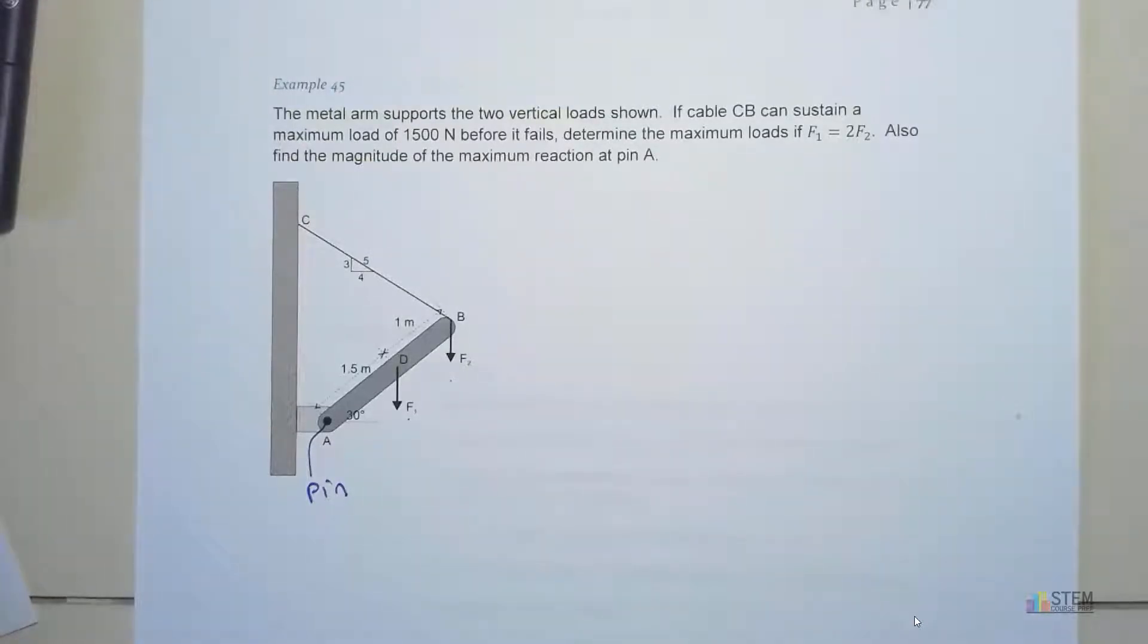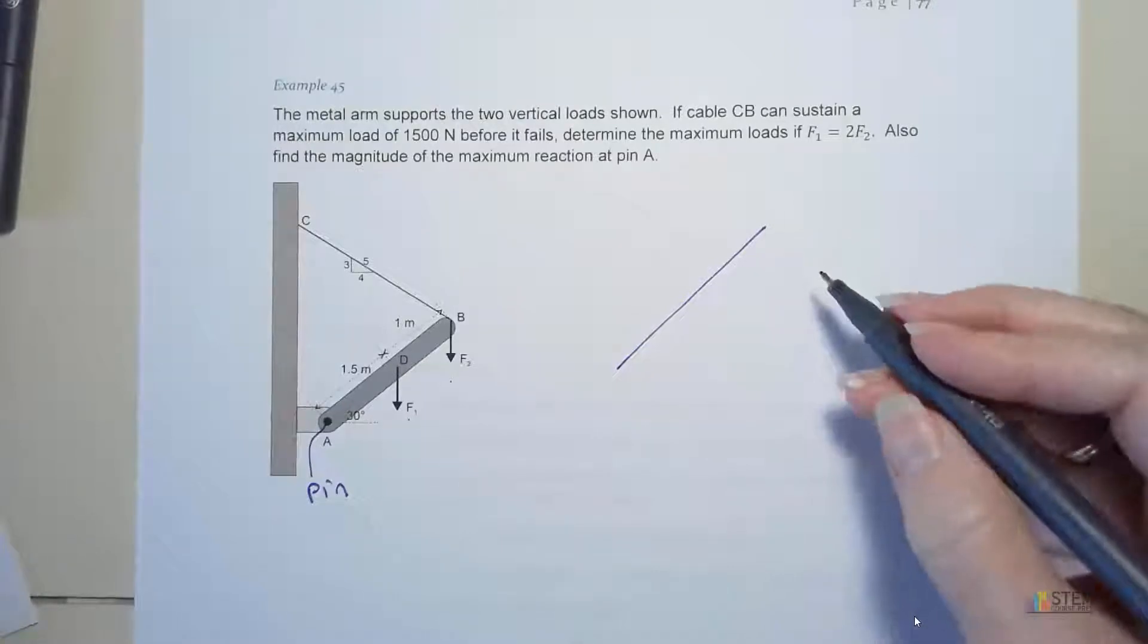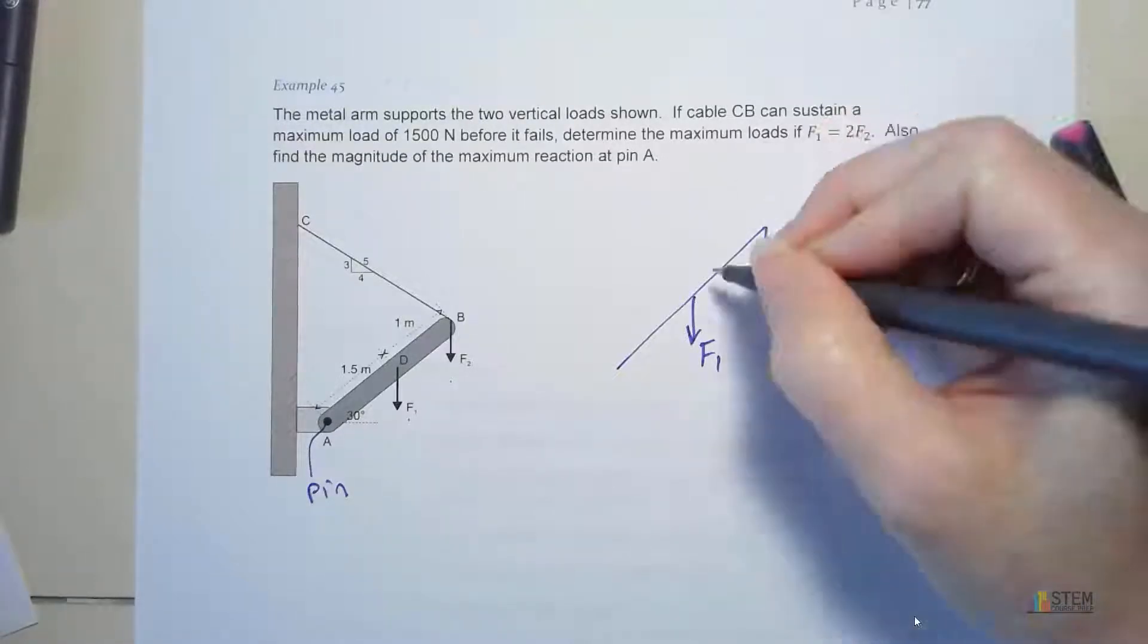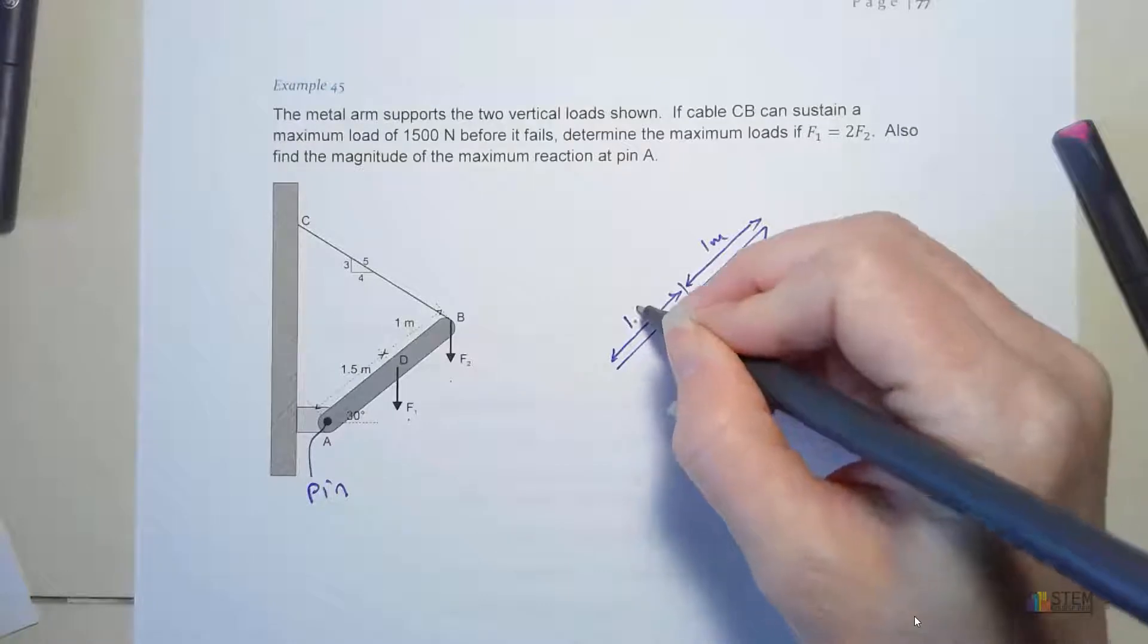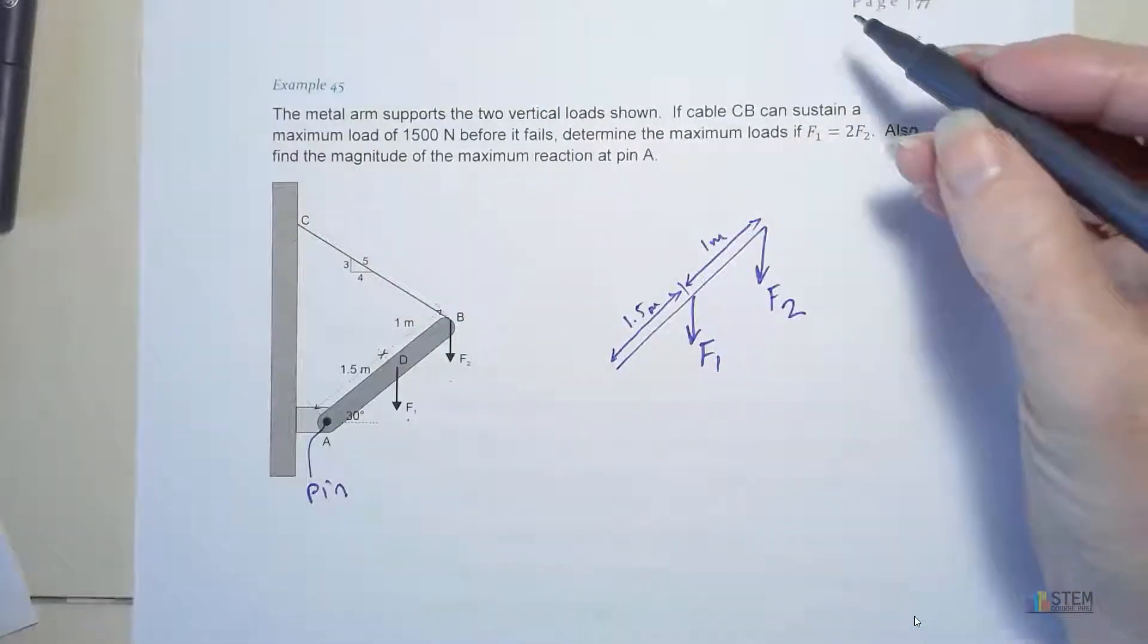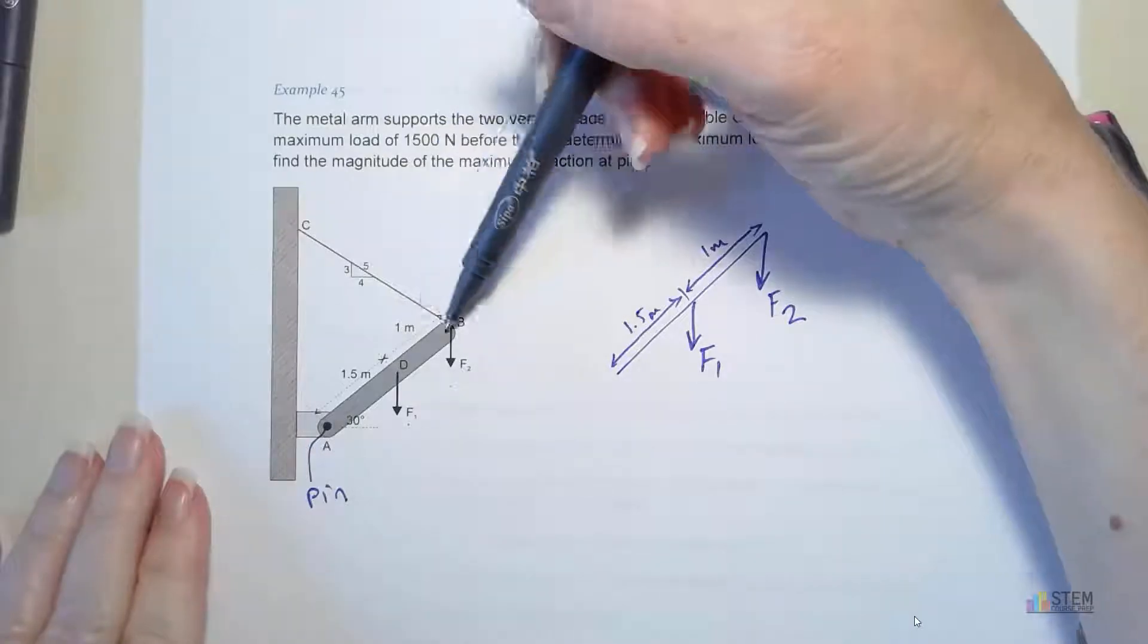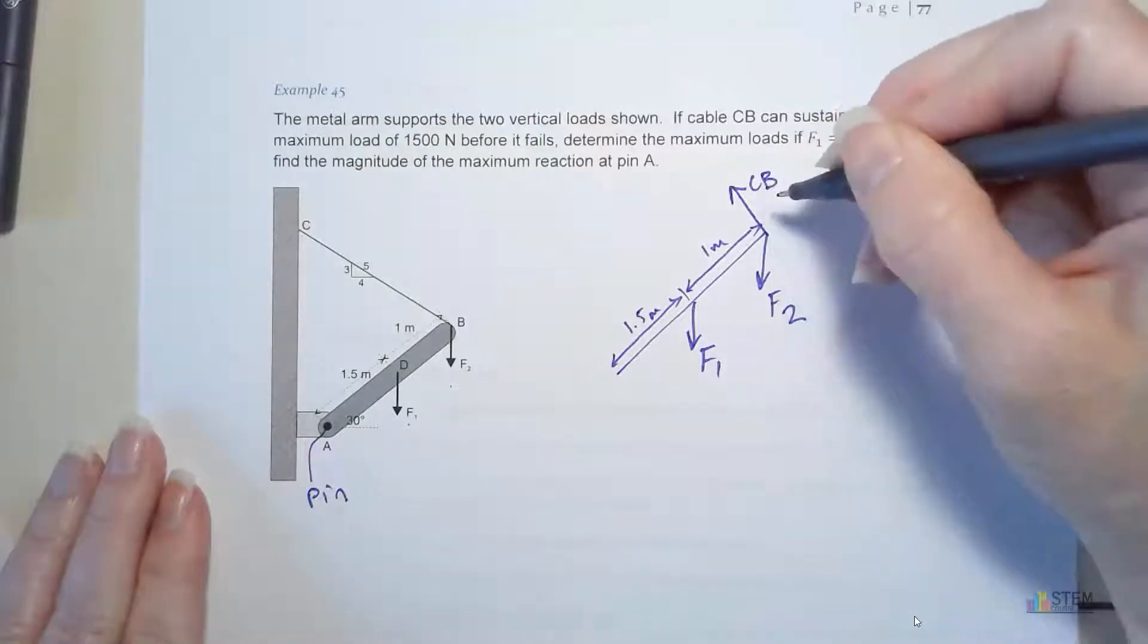What's our first thing we want to do? That's right, free body diagram. Let's draw the metal arm and all the forces acting on that. Let's put F1 and F2 first, those are the easiest ones. You can put the distances on here if you want. Now we've got F1 and F2. What else do we need? What about the cable? Which way should that force be? Remember a cable always pulls, it doesn't ever push. So it wouldn't make sense for the cable to be going this direction, pointing into the metal arm. It should be pulling up.